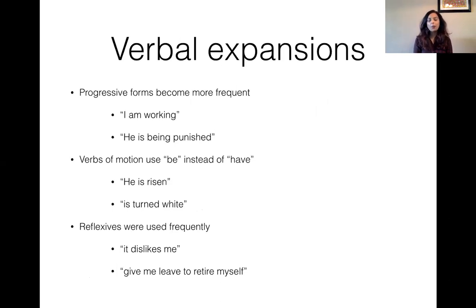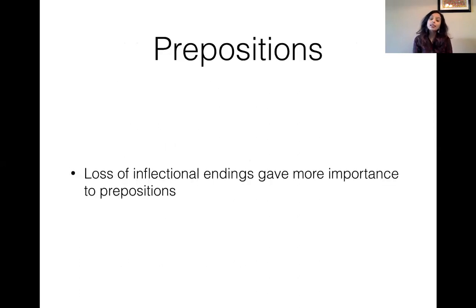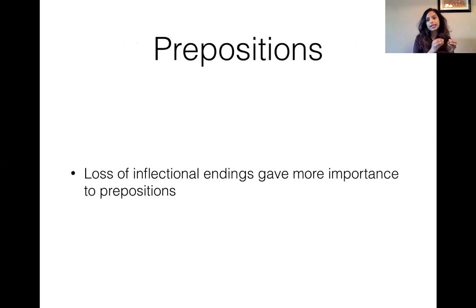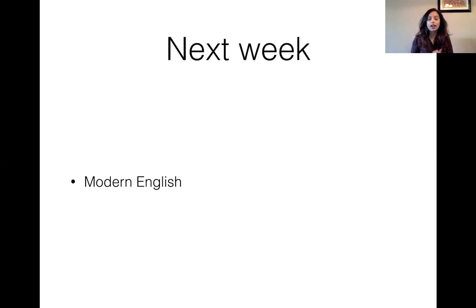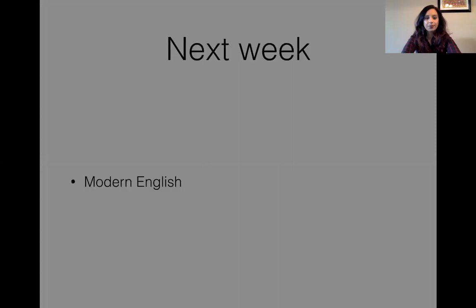Verbal expansions became more common in Modern English: progressive forms like 'I am working', 'he's being punished'; verbs of motion using 'be' instead of 'have', as in 'he is risen', 'he is turned white'; and reflexives were frequently used, e.g., 'it dislikes me', 'give me leave to retire myself'. Finally, the loss of inflectional endings gave more importance to prepositions — to, above, from, with, at, in, etc. The information previously supplied by inflectional endings had to be recovered somewhere, and prepositions were the way the language achieved this. I'll see you next week when we start Late Modern English.